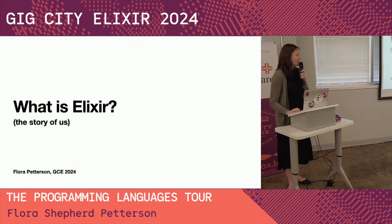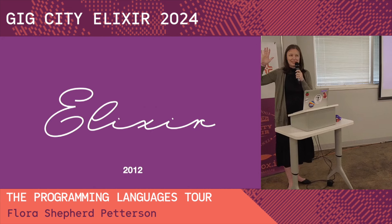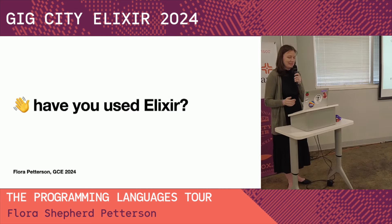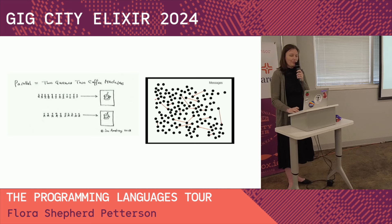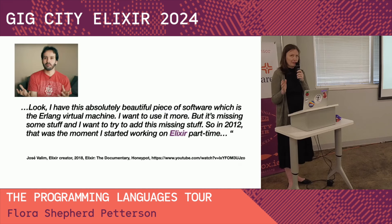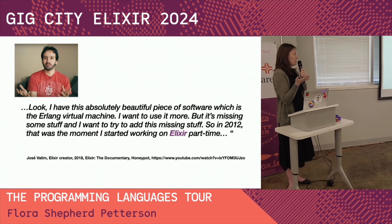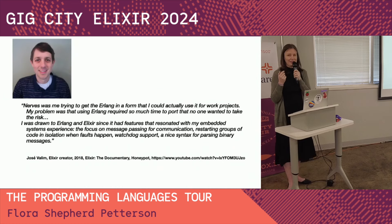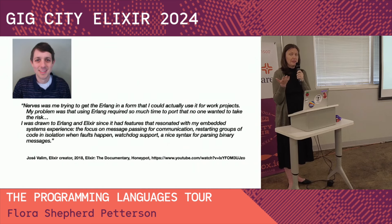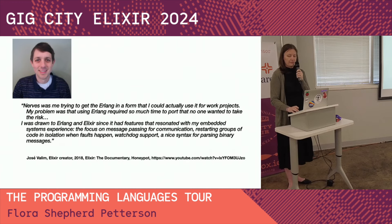So, the story of our community. Why was Elixir created? What was the motivation? There's a quote from José right at the beginning saying that the Erlang VM is absolutely beautiful software — he wanted to use it more, but it was missing some stuff and he wanted to add it. That's when he started working on Elixir. He reached out to Frank Hunlith, who talks about wanting to get Erlang in a form he could actually use for work projects. Erlang required so much time to port that nobody wanted to take the risk, but Elixir and Erlang had features that resonated — embedded message passing, fault tolerance, and more.